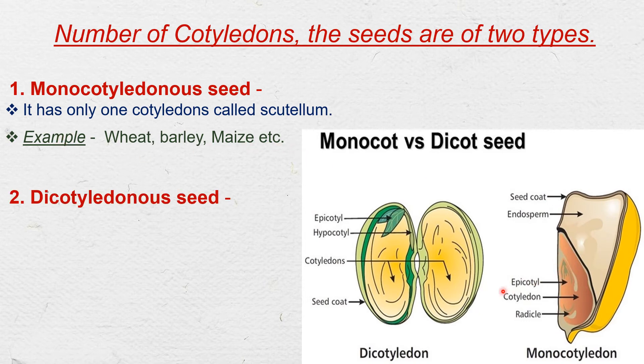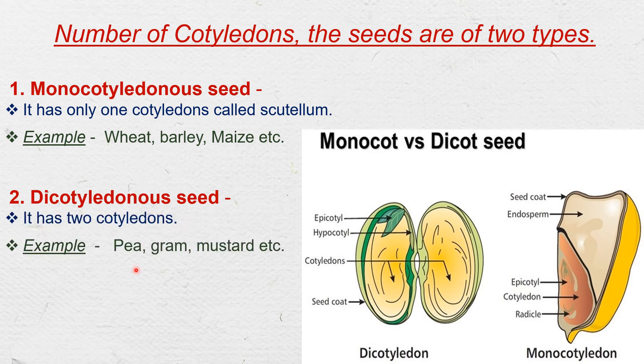Second is the dicotyledon seed — it has two cotyledons. For example, pea, gram, mustard, etc.